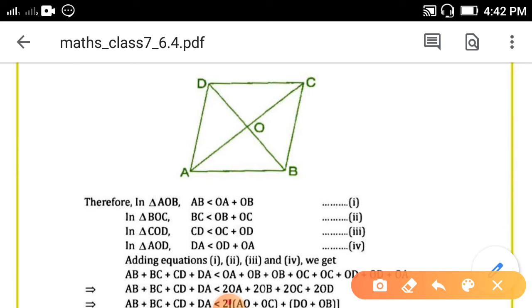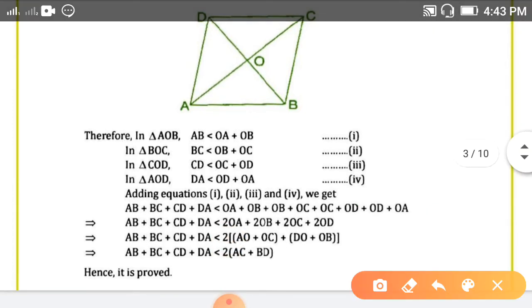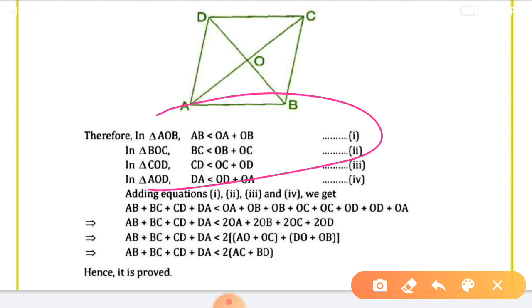In this triangle, first one AOB, so AB is less than OA plus OB. If you add these two sides, the sum of these two sides will be greater than the third side. Same you have to do for other three triangles. Second one BOC, so BC is less than OC plus OB. For this triangle, DC is less than DO plus OC. Then last triangle, AD is less than DO plus OA. So here four equations you got - this property that sum of any two sides of triangle is always greater than the third side, then only triangle is possible.